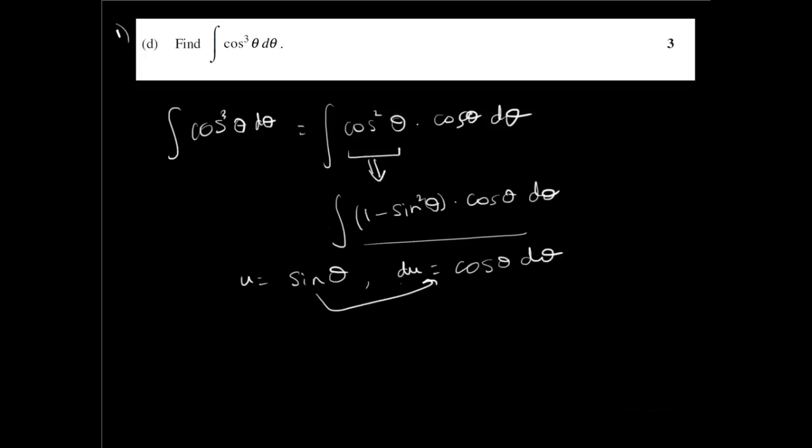So rewriting this equation, I get the integral of 1 minus sin squared theta, but sin is u, so it's 1 minus u squared, multiplied by cos theta d theta, which is du.